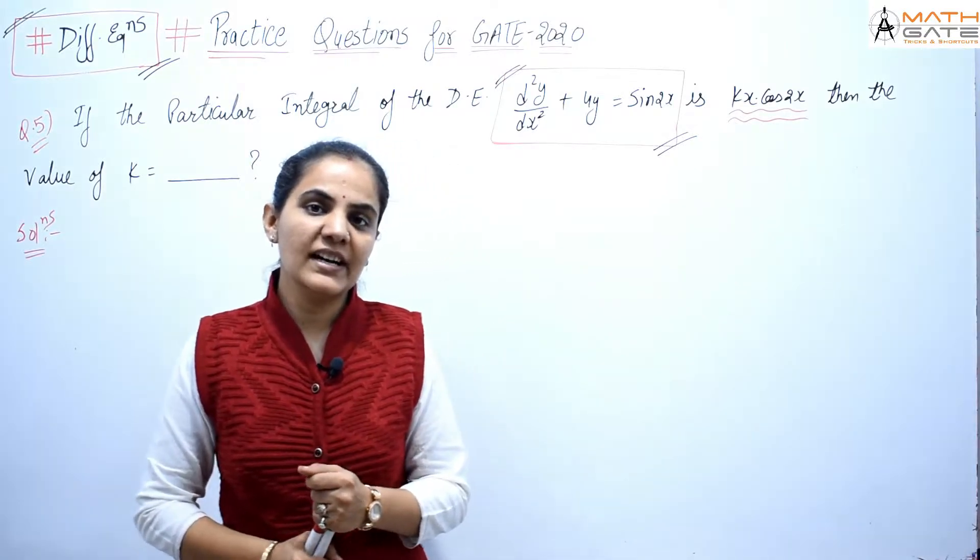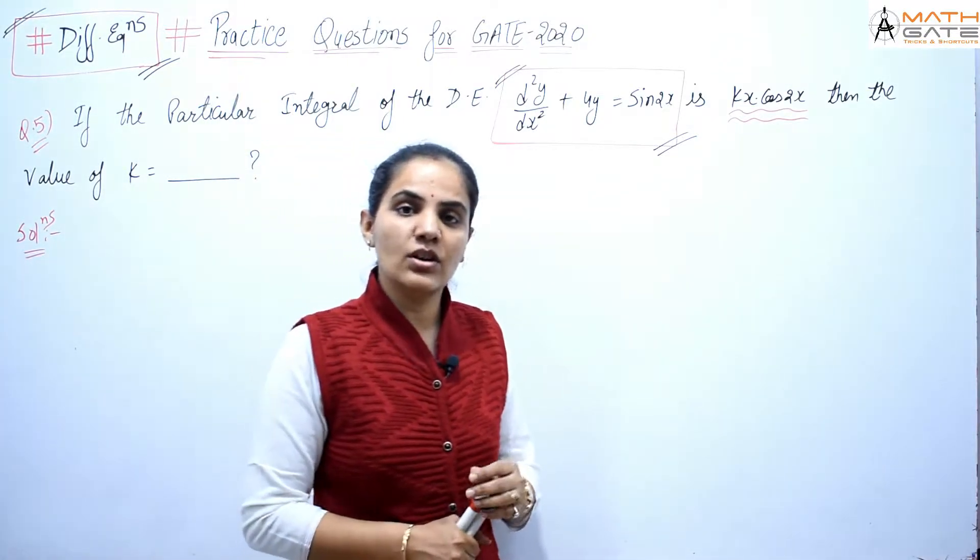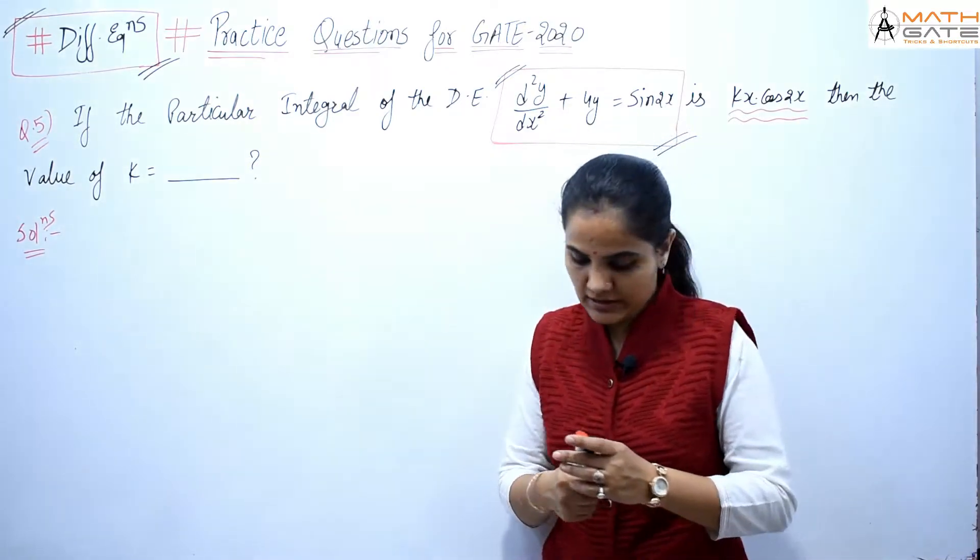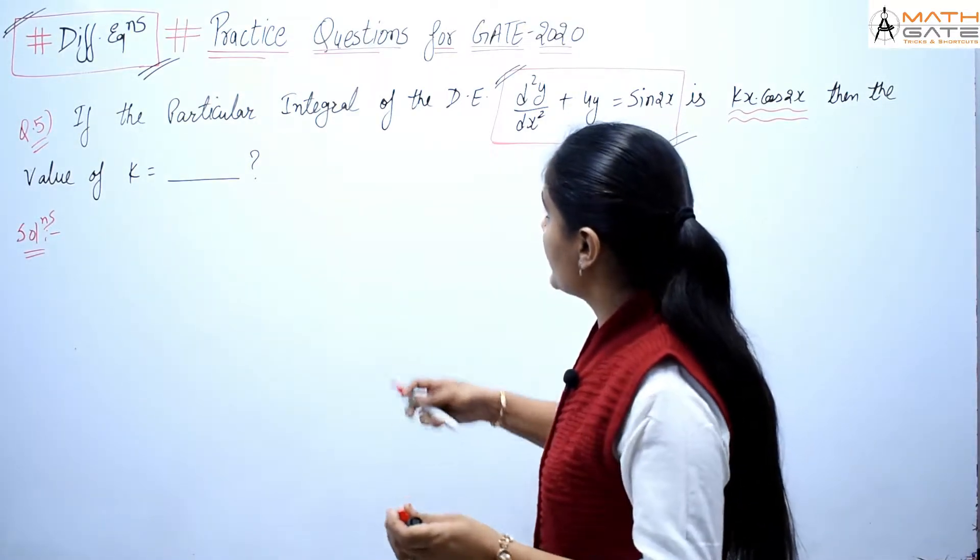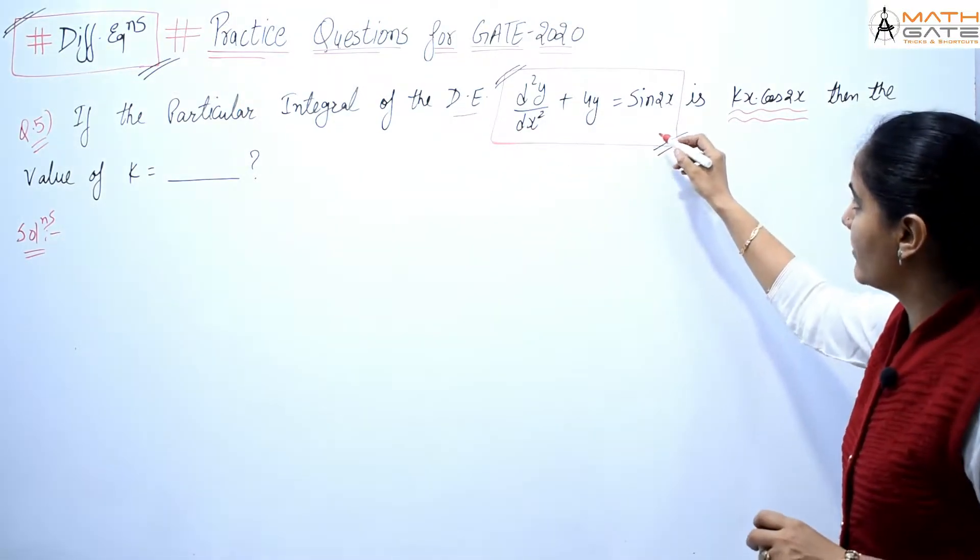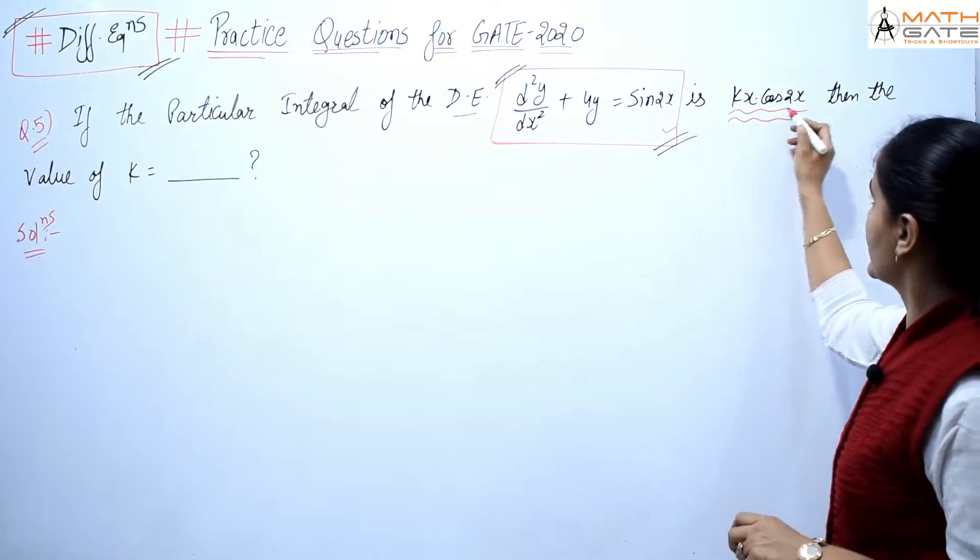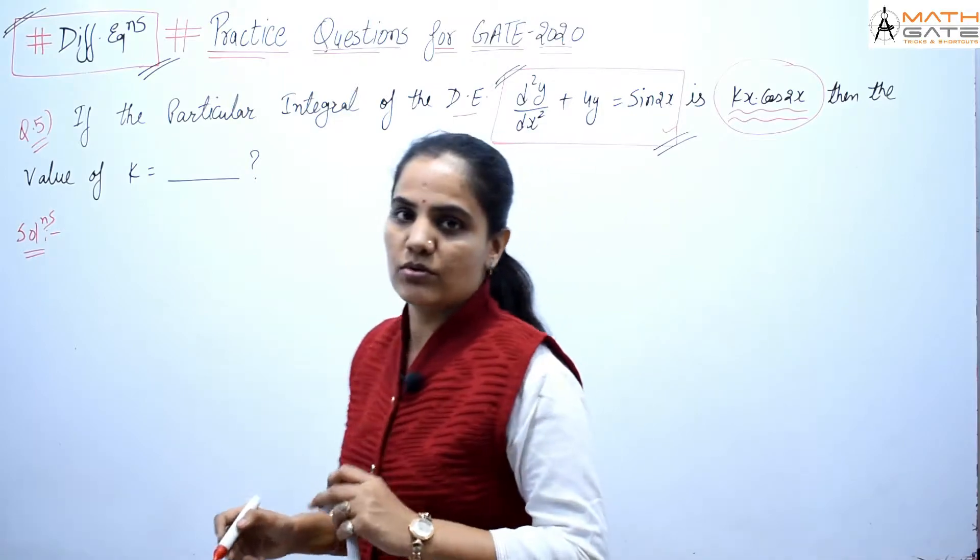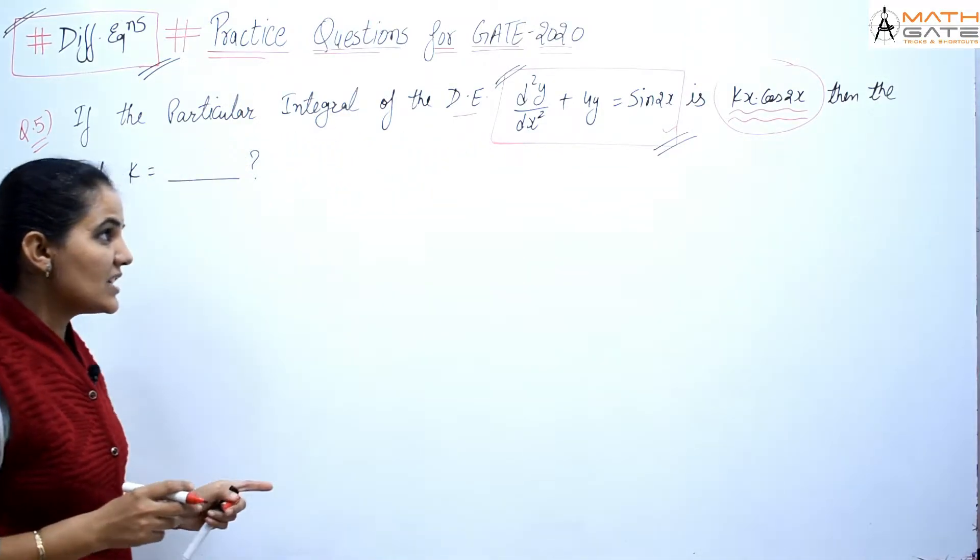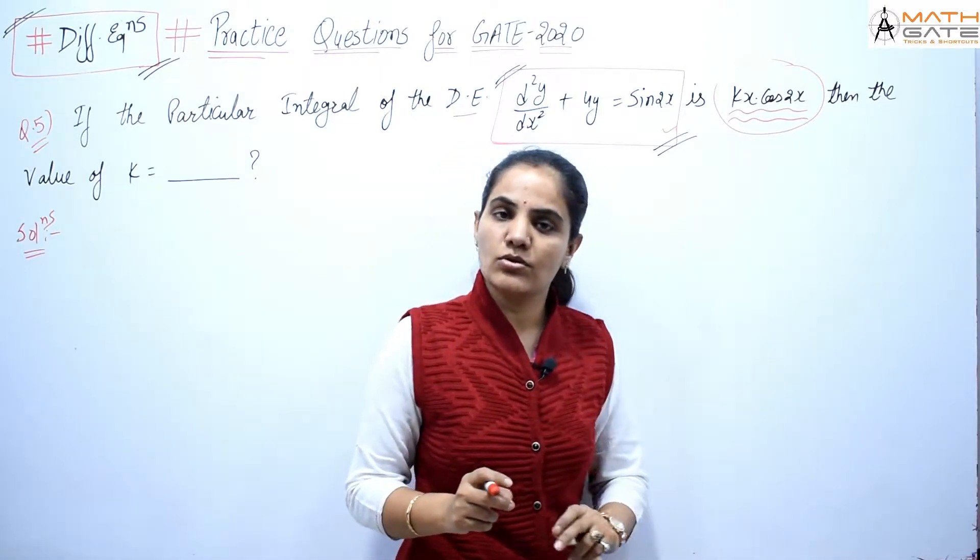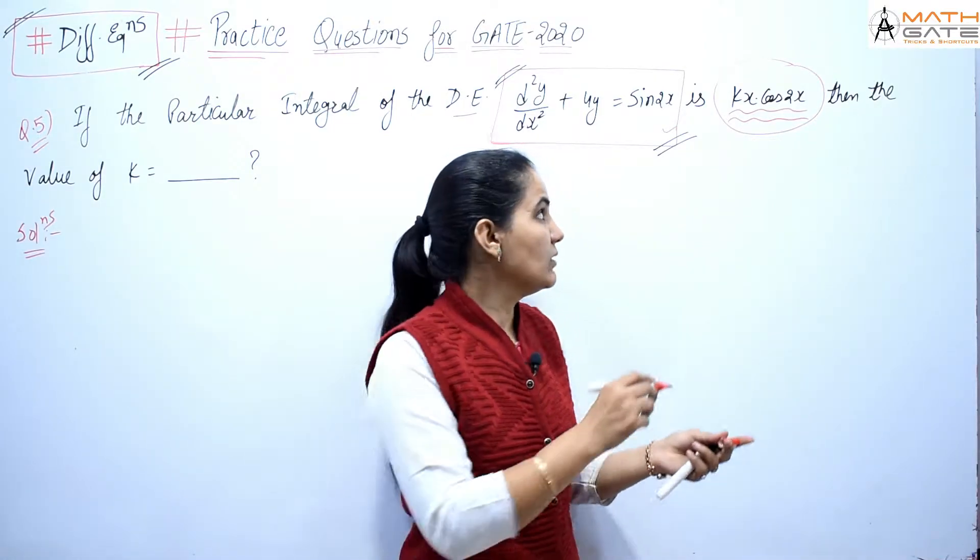Hello students, welcome to Math Guide. Let's discuss the next question of differential equations. This question is from particular integrals. The question is: if the particular integral of the differential equation d²y/dx² + 4y equals sin(2x) is kx cos(2x), then the value of k equals what? Here, the differential equation is given as kx cos(2x), and we have to find out the value of this k.